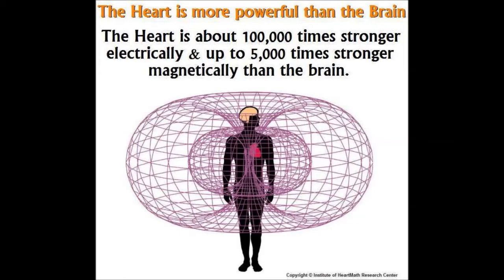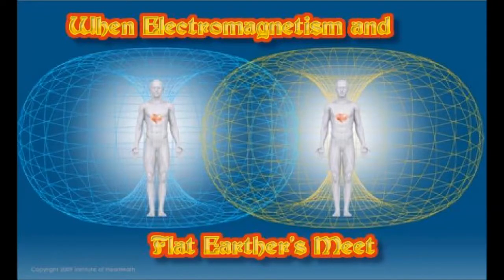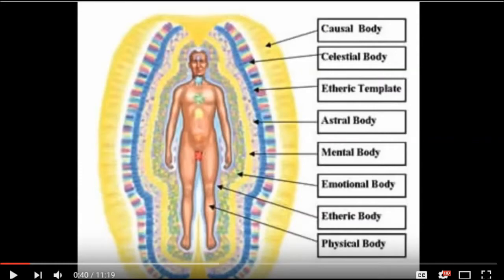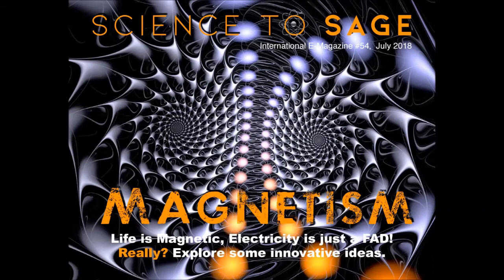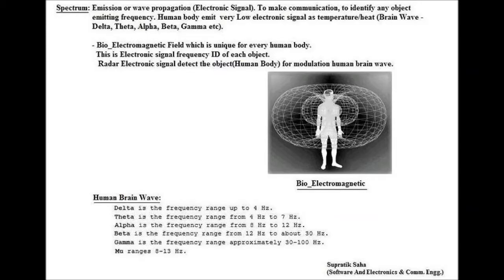It's all working in different dimensions. The movie 'Thrive' shows the toroidal field. Our heart is 100,000 times stronger electrically and 5,000 times more magnetic than the brain. We feel the attraction principle. There are over nine different aura fields that biofield tuning taps into. The earth works with its biofield, earth dome, and electrolysis salt water that keeps alternating current going — it's all based on magnetism and magneticity. We are magnetic beings.